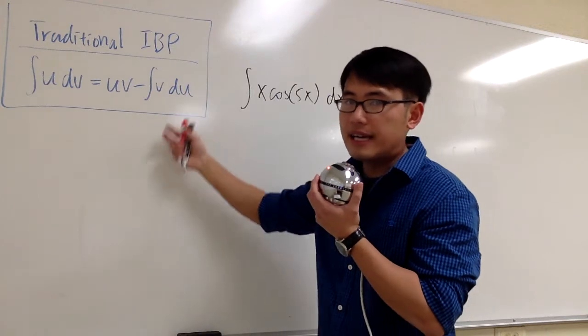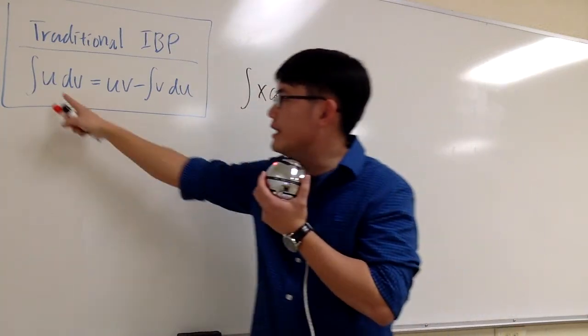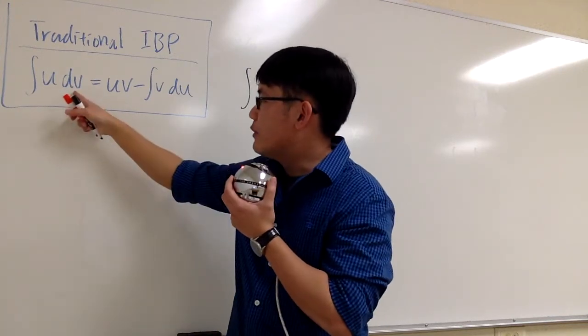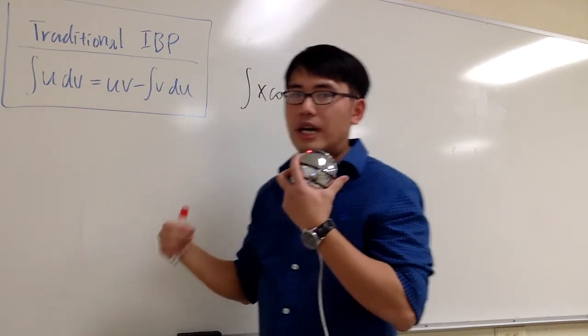What this is saying is that we look at our integral and we have to pick something for u and differentiate the u, and then we have to choose something for dv and integrate dv.